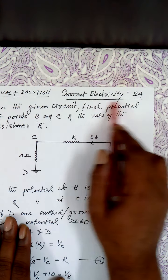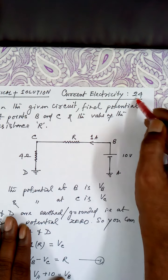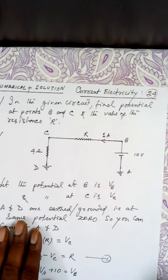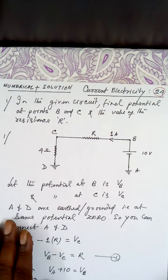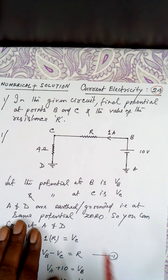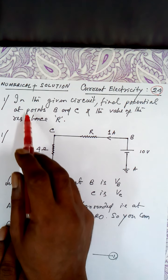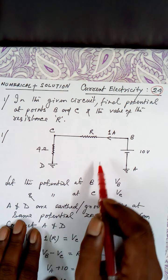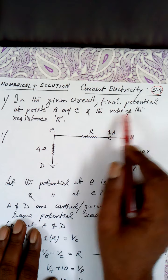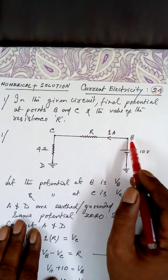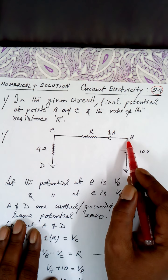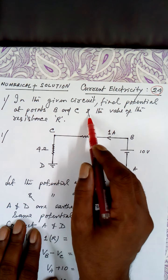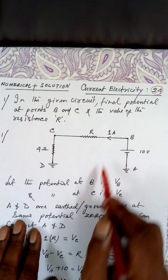Current electricity, problem 24. Let us do two numericals quickly — very simple. In the given circuit, find the potential at point B, the potential at point C, and the value of the unknown resistance.